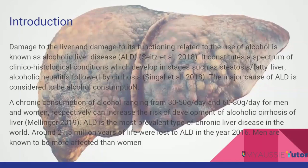The major cause is excessive consumption of alcohol. What is considered excessive? Chronic consumption ranging from 30 to 50 grams per day for women and 60 to 80 grams per day for men can increase the risk of developing alcoholic cirrhosis of the liver. Anything in this range or greater is the highest risk factor. The most prevalent type of chronic liver disease worldwide is alcoholic liver disease, and the most common cause is alcohol consumption.